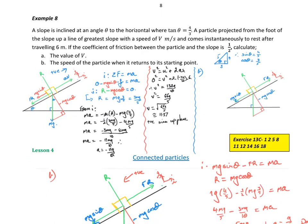A slope is inclined at an angle theta to the horizontal, where tan theta is equal to 4 thirds. A particle is projected from the foot of the slope up the line of greatest slope with a speed of V metres per second. It comes instantaneously to rest after travelling 6 metres. If the coefficient of friction between the particle and the slope is a half, calculate the value of V.